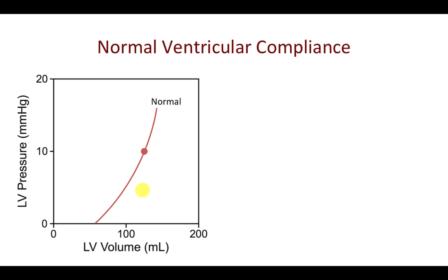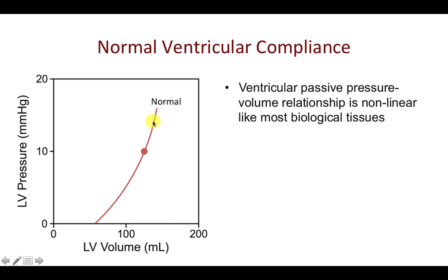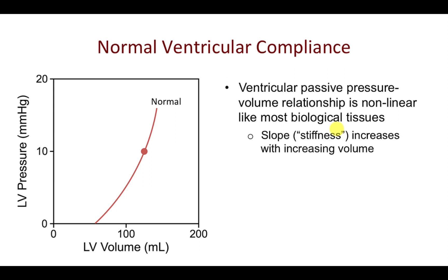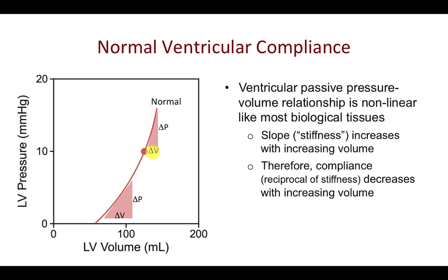If we plot a series of pressures and volumes within the ventricle, we get a curve beginning at the unstressed volume, with pressure rising as volume increases. Note that this relationship is nonlinear, like nearly all biological tissues. The more you stretch the tissue, the more it resists deformation — it becomes stiffer. This is shown by the increasing slope of the curve: at low volumes the slope is relatively low, but at higher ventricular volumes the ratio of delta P over delta V is very high — greater stiffness. Therefore, compliance, the reciprocal of stiffness, decreases with increasing volume.